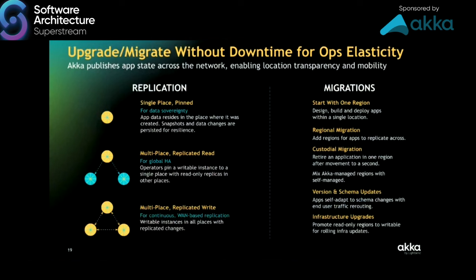Ops elasticity is equally important to workload elasticity — being able to migrate and upgrade without downtime. To support this, ACA has three replication schemes: 'pinned' for ensuring data sovereignty; 'multi-placed with replicated read' for global active-passive; and 'multi-placed replicated write' for truly continuous WAN-based applications where all replicas are fully active serving both reads and writes. These different models give ops a lot of flexibility for managing the application without downtime — changing data, changing topology, even moving from single region to multi-region, handling version and schema changes, and updating the underlying infrastructure since that's completely decoupled.